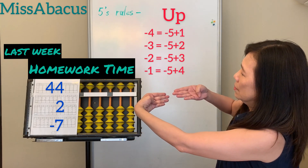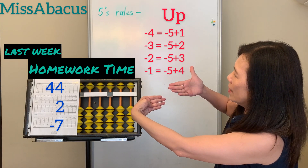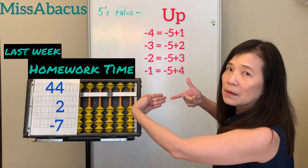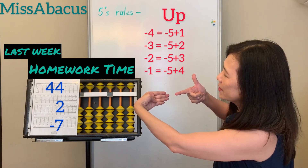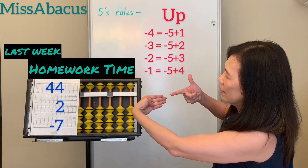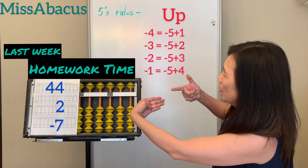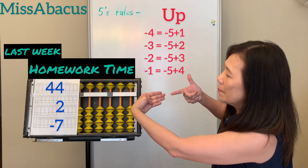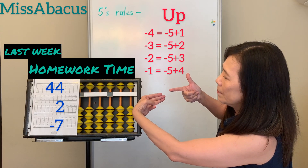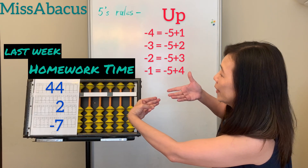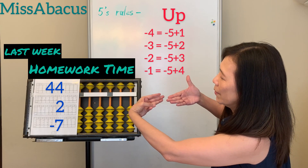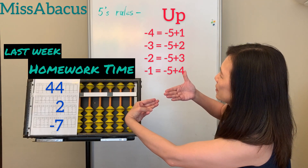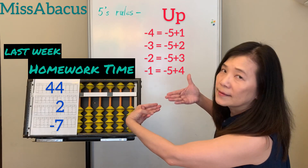Let's do the double-digit numbers with fingers from number 36: 44 plus 2 — 5 minus 3, that's 2. Then minus 7: you only have 6 left, so how to minus 7 — minus 10, plus 3. Answer: 35.